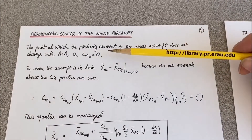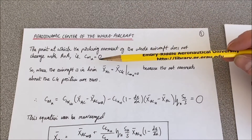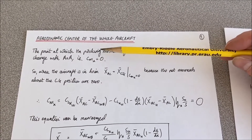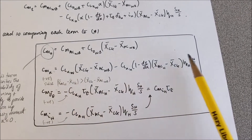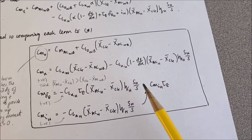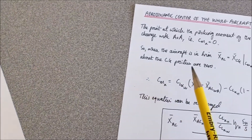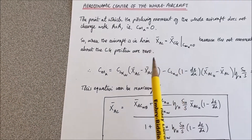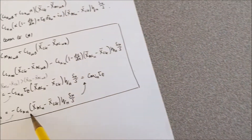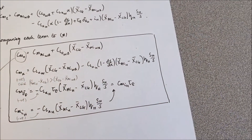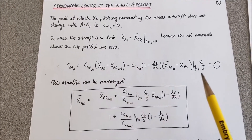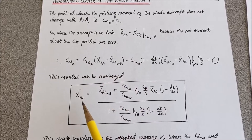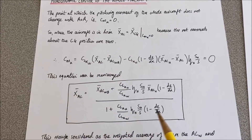With these two pieces of information — firstly that Cm_alpha equals zero — we can return to our Cm_alpha equation from the previous video. We can set this to zero and then, using the assumption about where the aerodynamic centre is with respect to the centre of gravity position, we can write all of the x-bar_cg terms as x-bar_ac. That whole equation can then be rearranged to tell us where the aerodynamic centre of the whole aircraft is.